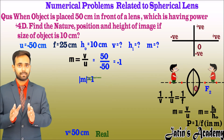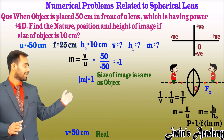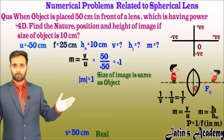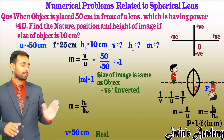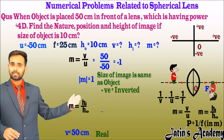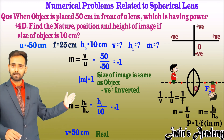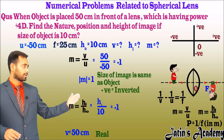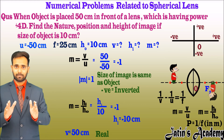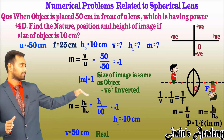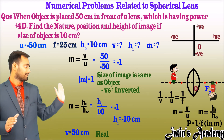The magnitude of magnification is 1, meaning the image size is the same as the object size. The negative sign indicates the image is formed below the principal axis (inverted). For the height of image: m = h_i / h_naught → −1 = h_i / 10, so h_i = −10 cm. The image height is 10 cm and is inverted. Therefore, the nature of the image is real and inverted.